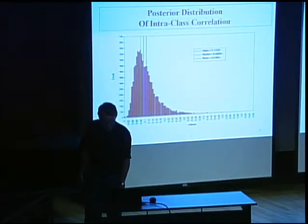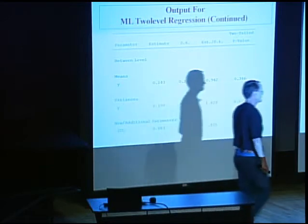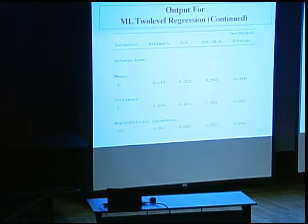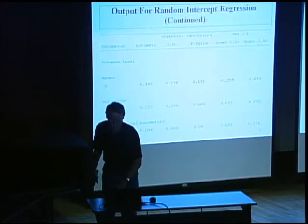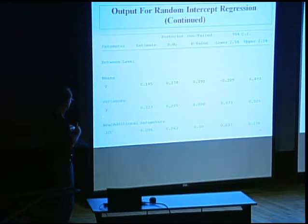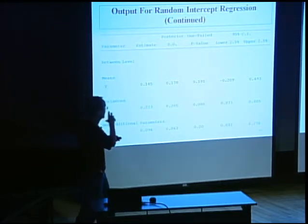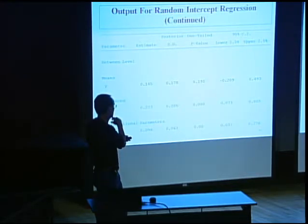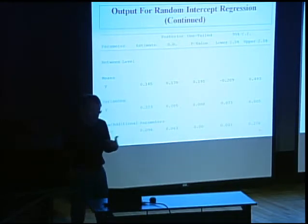If you do ML analysis on this data — looking at slide 98 — you get different estimates. Comparing slide 94 (Bayes) versus slide 98 (ML): the between-level variance is 0.223 in Bayes versus 0.19 in ML — underestimated. The intraclass correlation is 0.096 in Bayes versus 0.03 in ML — substantially underestimated. This motivated a simulation study with a small number of clusters to compare quality of Bayes and ML estimation.